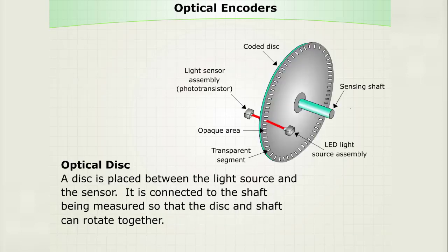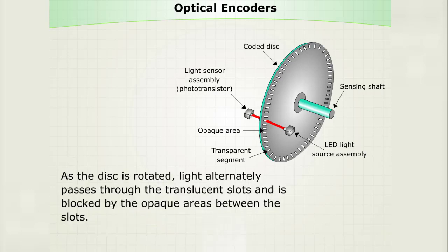Optical disc. A disc is placed between the light source and the sensor. It is connected to the shaft being measured so that the disc and shaft can rotate together. As the disc is rotated, light alternately passes through the translucent slots and is blocked by the opaque areas between the slots.